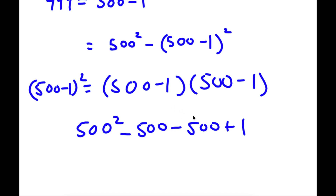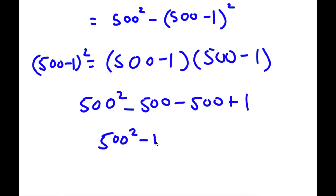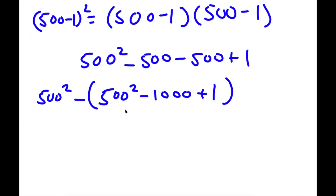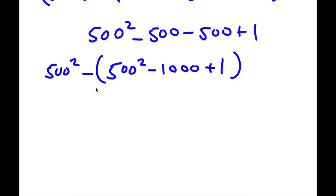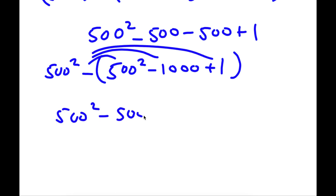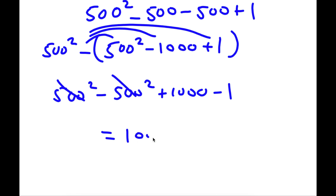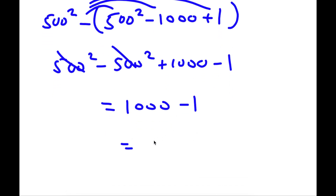And negative 500 minus 500 is going to be negative 1000. So I have 500 squared minus 1000 plus 1. Now we can bring in our 500 squared: so we have 500 squared minus (500 squared minus 1000 plus 1). Distributing the negative sign gives 500 squared minus 500 squared plus 1000 minus 1. These two cancel out, leaving 1000 minus 1, which is 999. So 999 is my answer.